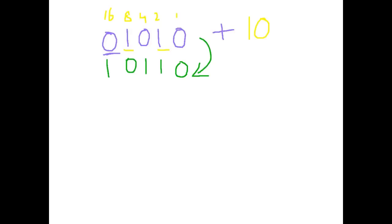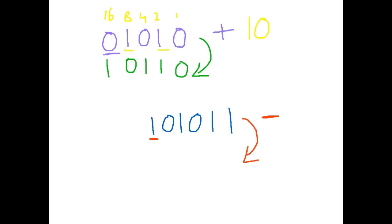Now let's say I was doing a calculation and was suddenly faced with the number 1 0 1 0 1. The first thing I would think is that it is a negative number because of that leftmost bit. So I take the 2's complement to determine what it's the negative of. The first number is actually a 1, so I keep that and convert the remainder. Our place values are 1, 2, 4, 8, and 16 — we've got 16, 4, and 1 — so this is a negative 21.